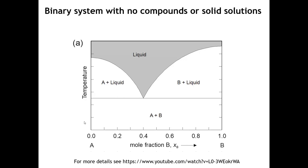How many phases are present in each region? With two components, the degrees of freedom is 3 minus the number of phases. In a two-component phase diagram, in any given region we will never have more than two phases, and at any given point we cannot have more than three phases present at equilibrium, since degrees of freedom cannot go below zero.